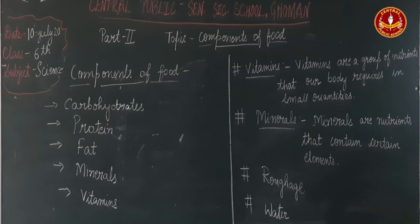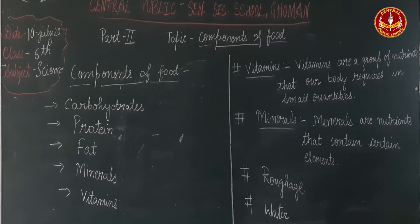Vitamin B is found in seafood, liver, fish, milk, and meat. It helps in the growth and development of the body.